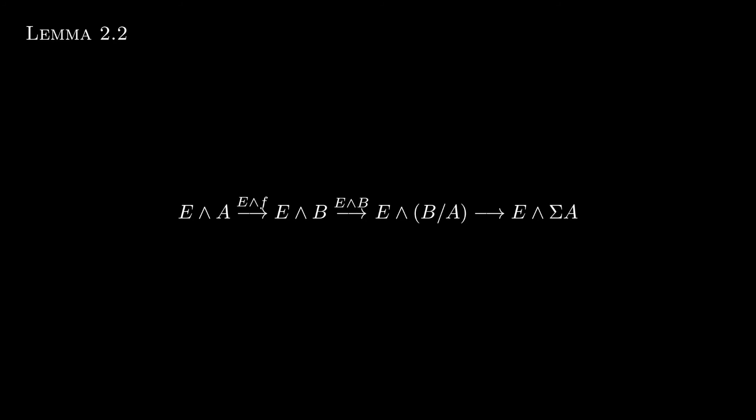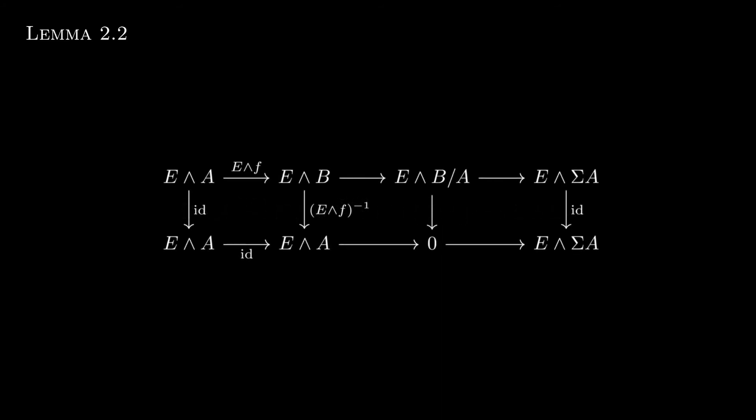So what I just said about this implying that E smash B/A is 0, we can see this a little more explicitly. It follows from our earlier remark that if the first map is the identity, then in the homotopy cofiber sequence, the cofiber is 0. The three vertical morphisms are then isomorphisms, so the third is as well.